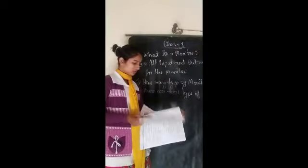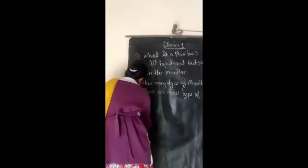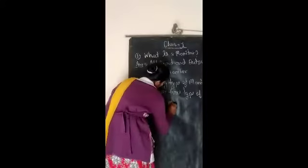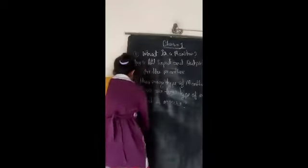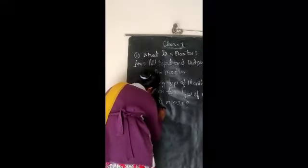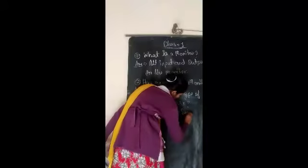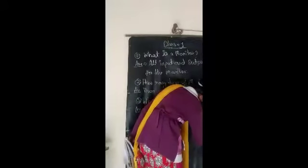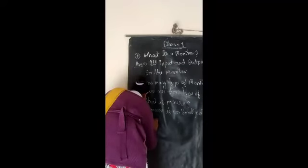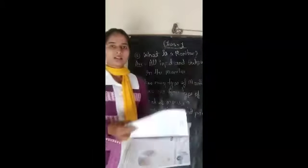Next question: what is a mouse? A mouse is a small pointing device. How many buttons are there in a mouse? There are three buttons in a mouse.